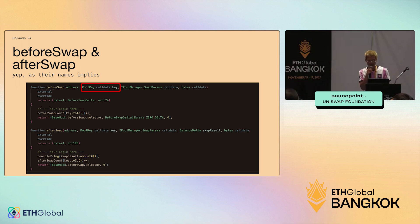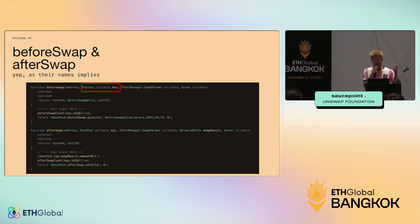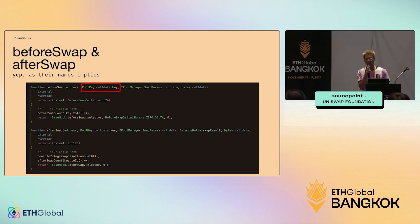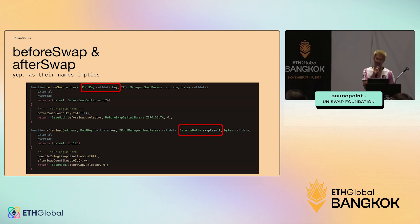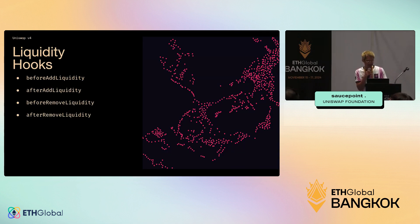Before-swap gets executed before a swap happens; after-swap gets called after a swap. Within before-swap you have access to the pool key, so you know the trading pair, the direction of the trade, and the size of the trade. In theory you can design one hook contract that services ETH/USDC, ETH/TETHER, ETH/BTC — one hook can facilitate different trading pairs. After-swap also passes the swap result: the input and output amounts, so you can build oracles or value redistribution mechanics with access to volume.